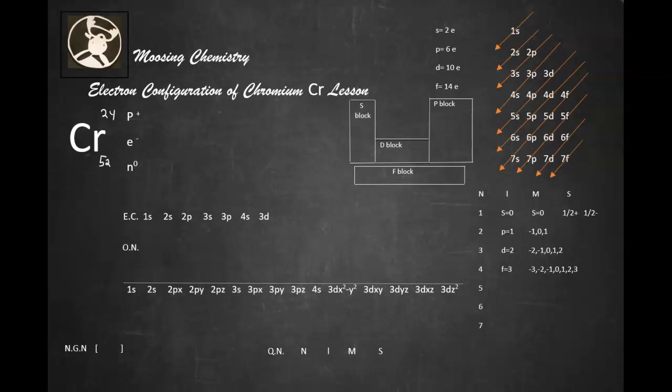Since the atomic number is 24, that means we have 24 protons in the nucleus. And since chromium is electrically neutral, we're going to have 24 electrons.